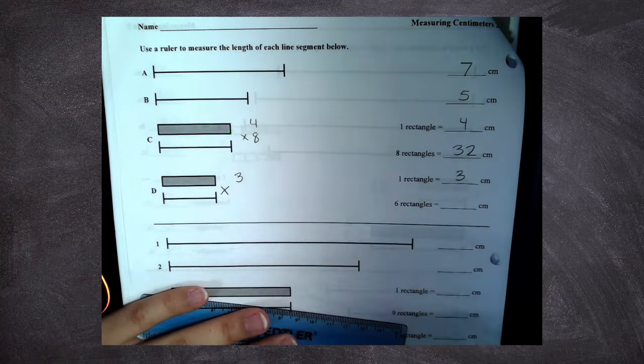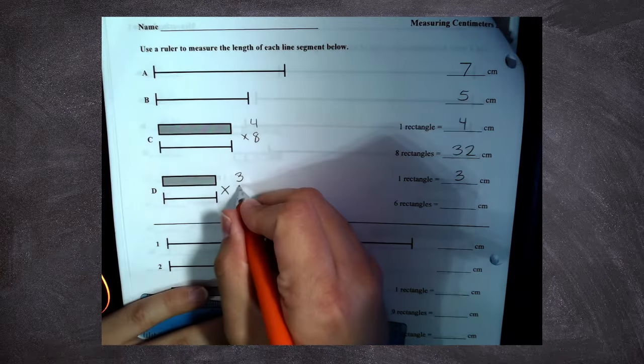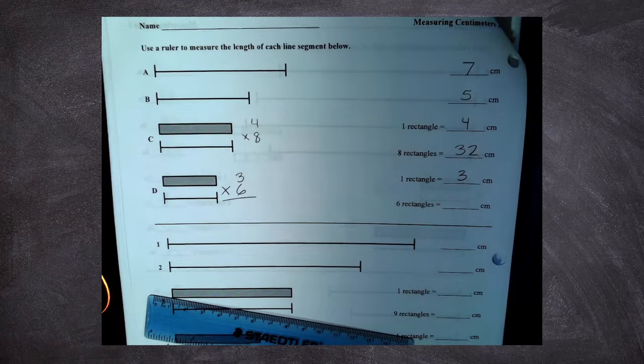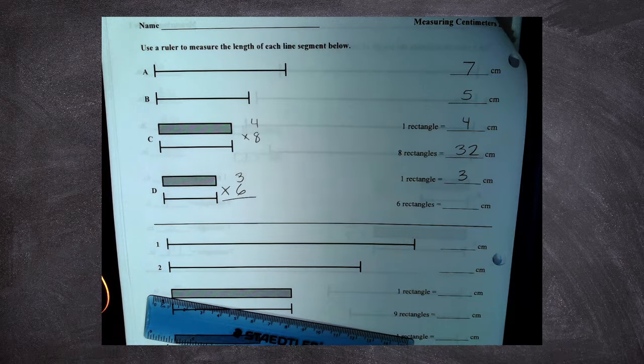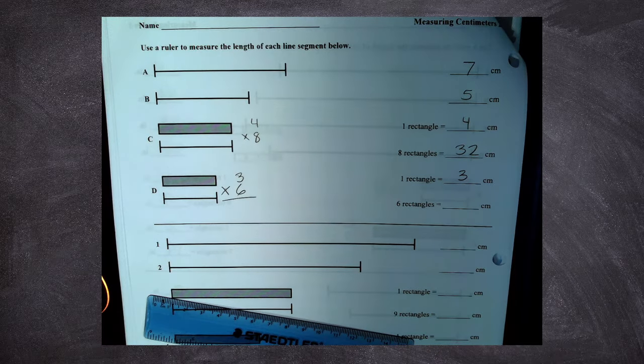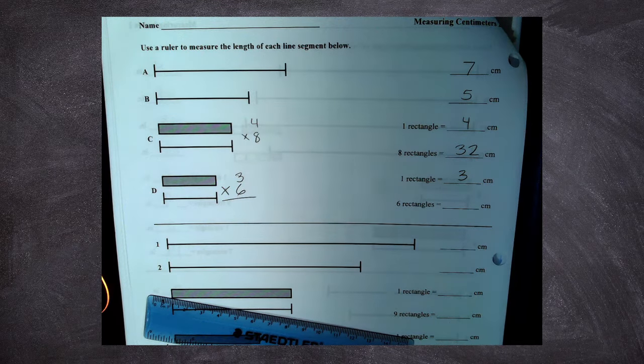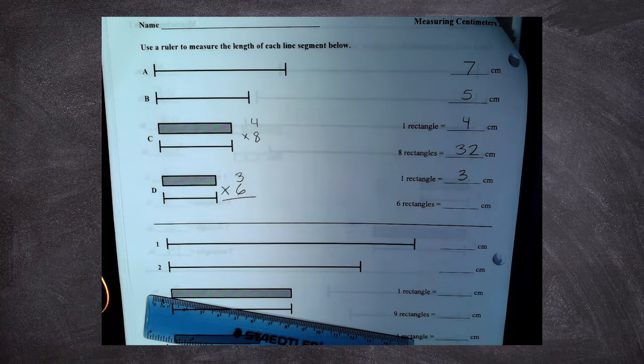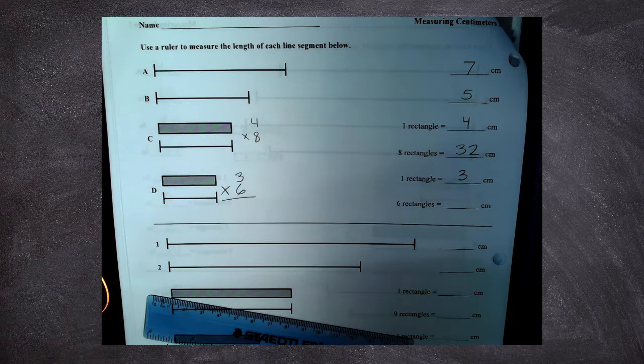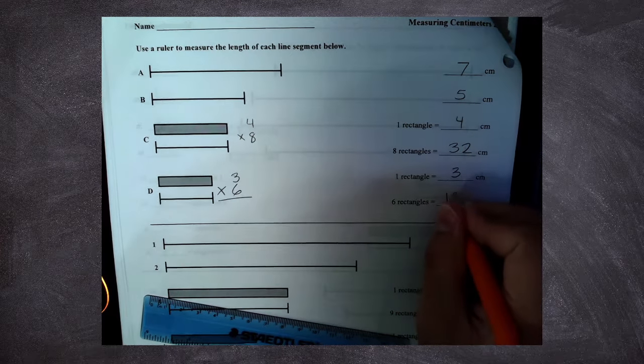So if I had six of them, I would do three times six. What is three times six? Ezekiel? 18. 18. Awesome job.